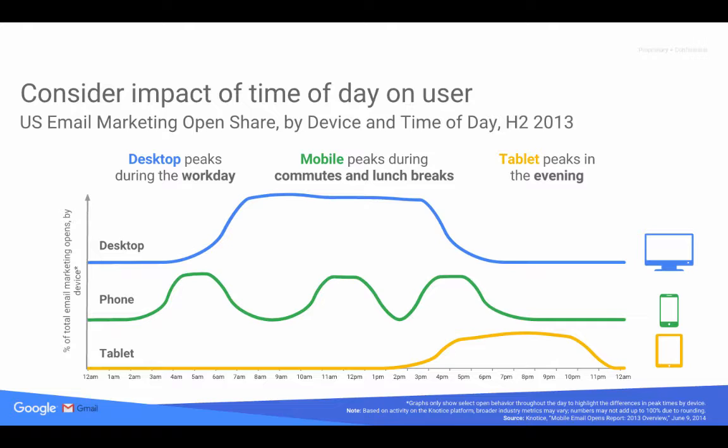Looking at the timing of how customers use various devices can be very insightful. Desktop peaks during the workday, mobile peaks during commutes and lunch breaks, and tablet peaks in the evening. We recommend that you adjust the targeting of your campaigns keeping in mind the timing when your ads are being shown.